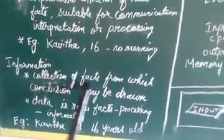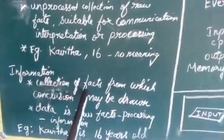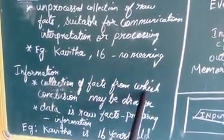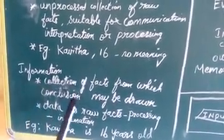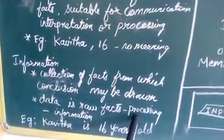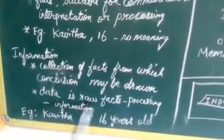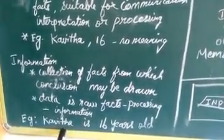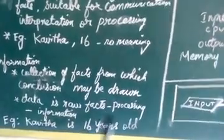Data is a collection of facts from which conclusions may be drawn. We collect data to make it meaningful. When raw data is processed, it becomes information. For example, 'Kavitha, 16' is raw data; when processed into 'Kavitha is 16 years old,' that becomes meaningful — that is information.